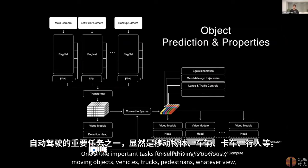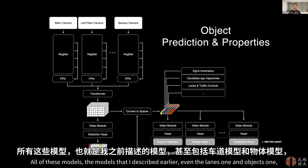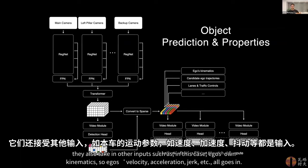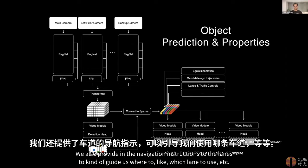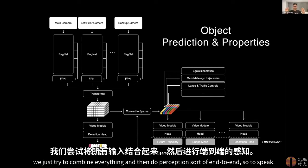Another important task for self-driving is obviously moving objects — vehicles, trucks, pedestrians. It's not sufficient to just detect them; you need their full kinematic state, shape information, and predicted futures. All of these models — including the lanes and objects ones — are in some ways multimodal models, in the sense that they take in not just camera video streams, but also other inputs such as ego's own kinematics: velocity, acceleration, jerk, etc. We also provide navigation instructions to the lanes to guide which lane to use. So everything is done within the network — it's a modern machine learning stack where we combine everything and do perception end-to-end.